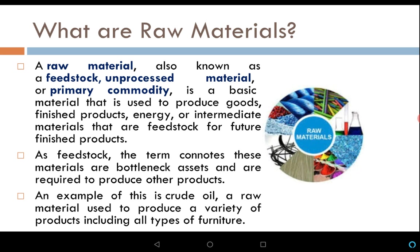First of all, let us know what raw materials are. A raw material, also known as a feedstock, unprocessed material, or primary commodity, is a basic material used to produce goods, finished products, energy, or intermediate materials. A raw material is a primary material from which secondary, tertiary, or the final product can be obtained. If there is no raw material, we cannot get the secondary material, the tertiary material, or the final material.